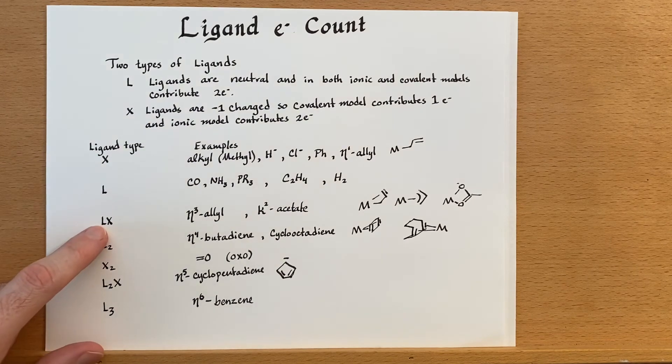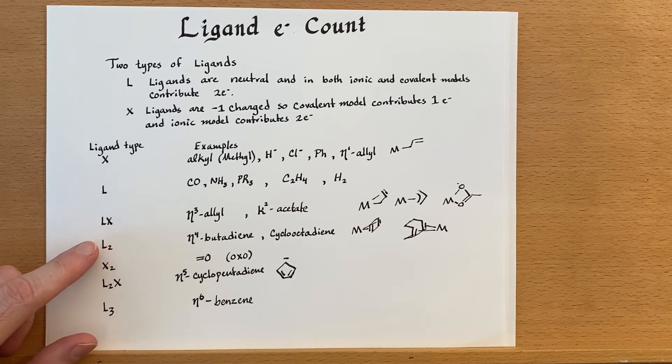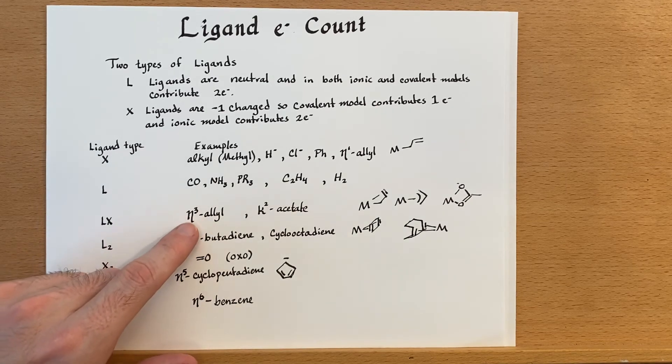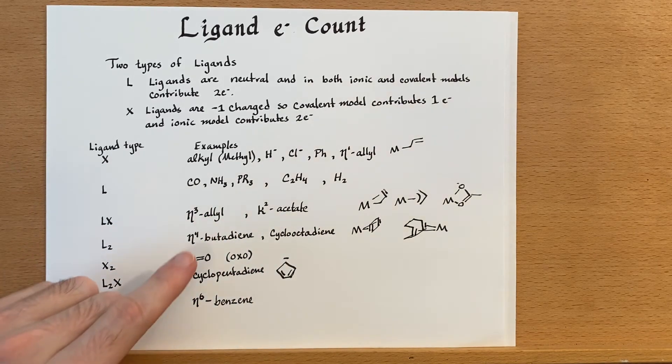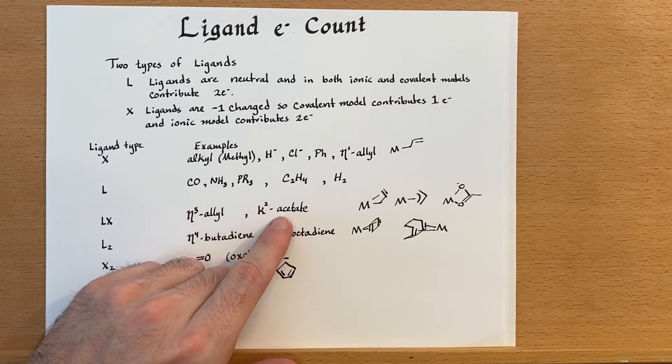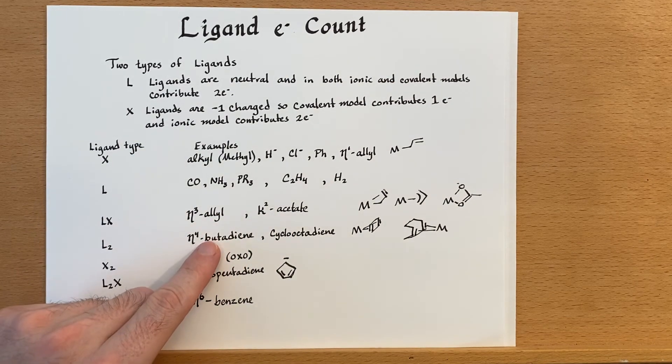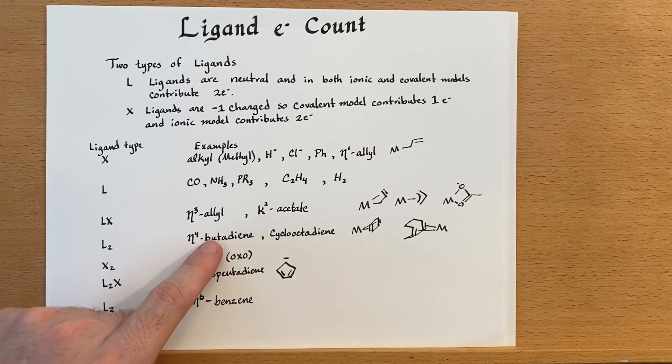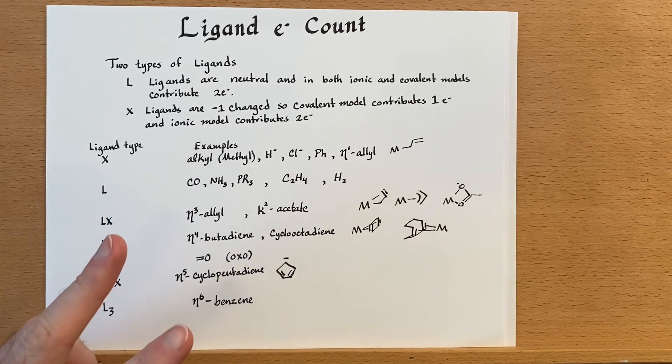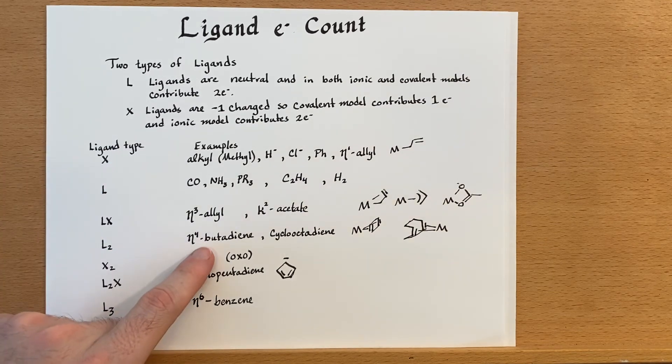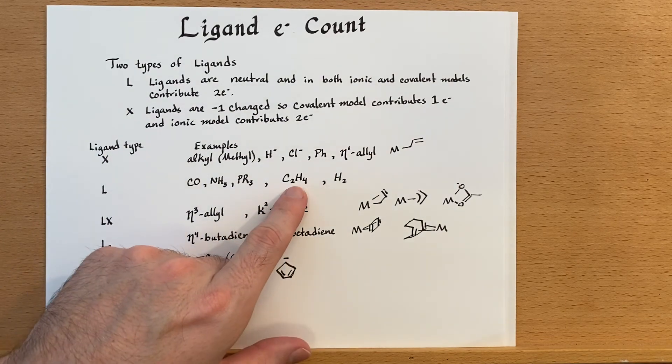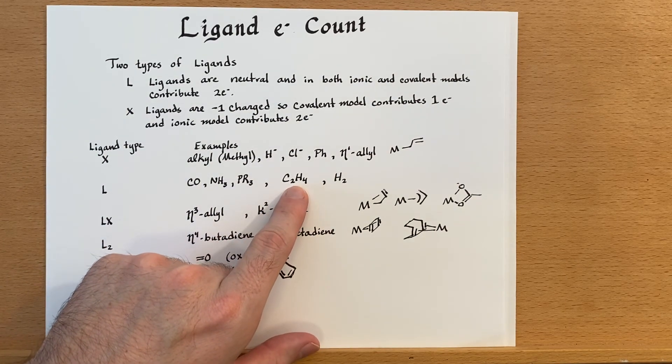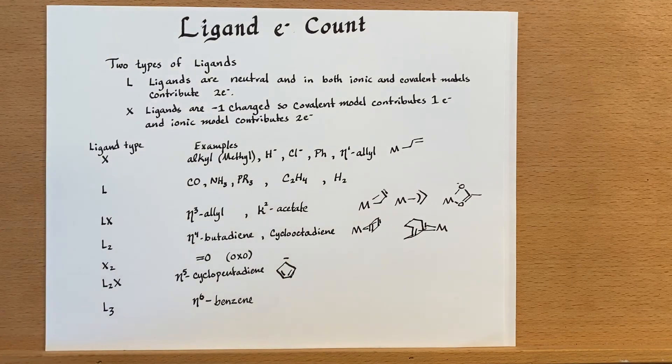So since they have a neutral ligand on there, that's two electrons. Now, if you're talking about the covalent model, then it would add an X ligand to that. So that would be three electrons for these. If you look at the ionic model, that would be four electrons. Now, L2, since both of these are neutral, then we have two L ligands, each contributing two electrons. That's four electrons for one of these, which is bound in that fashion. Essentially, it's simply just two ligands that have a double bond in them, both bound. So just add them up.